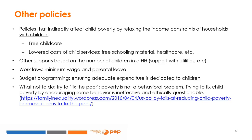Other policies aimed at increasing access of impoverished children and their families to high-quality social services, such as education, health, and nutrition, can indirectly contribute to lowering child poverty. For example, relaxing the income constraint of households with children through free or subsidized child care and schooling, lowering the costs of children's services such as free school materials and health care. Policies on parental leave and minimum wage can also positively affect child poverty, helping to stabilize household incomes. Ensuring an adequate proportion of the national budget is devoted to children and families is also part of the process. Finally, what not to do is try to fix the poor — we know that poverty is not a behavioral problem, and trying to change people's behavior in order to reduce poverty is not only ineffective, but also ethically questionable.